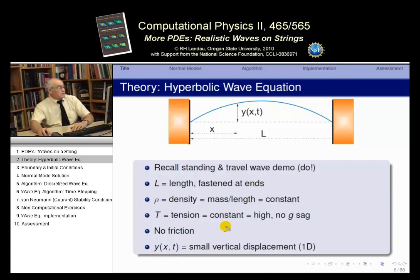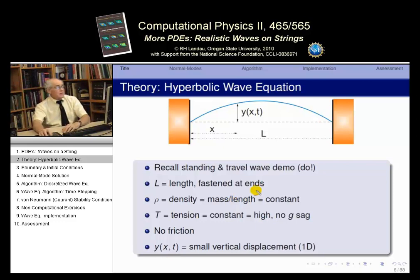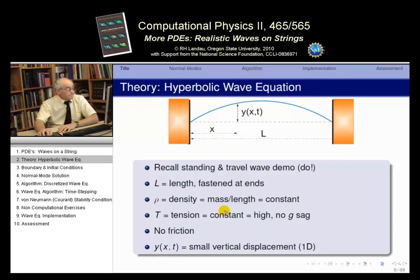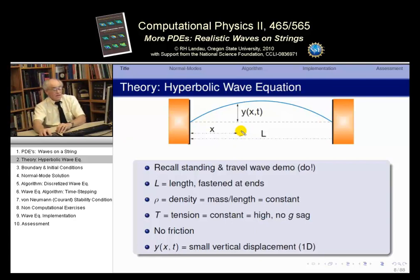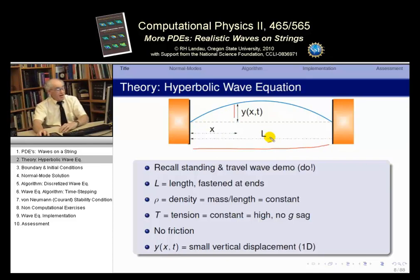Rho is the density of the string — the mass per unit length — assumed constant here. T is the tension, the force we're pulling on the string, also assumed constant. To be realistic, the tension is very high compared to gravity, so the string is horizontal rather than sagging. There's also no friction. We assume the displacements are very small: Y must be much, much less than L, for the equations we're deriving to be realistic.